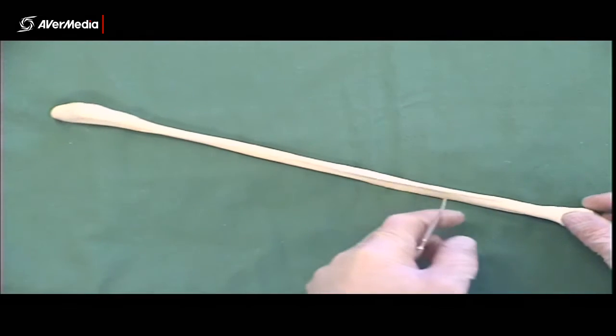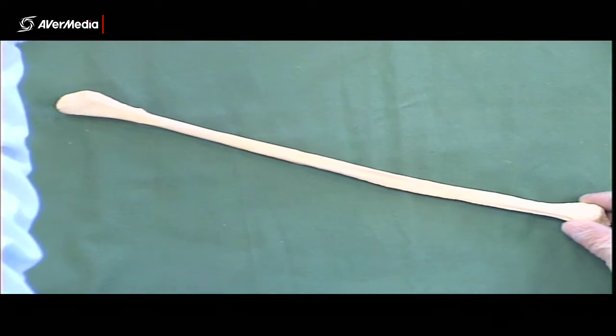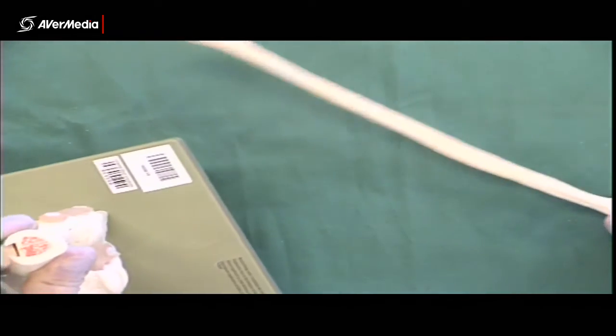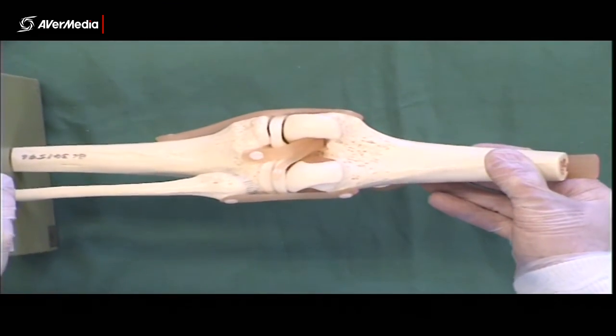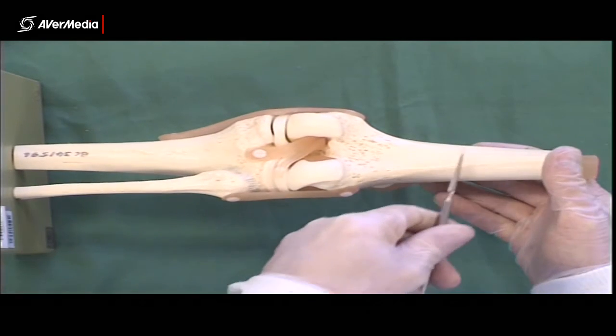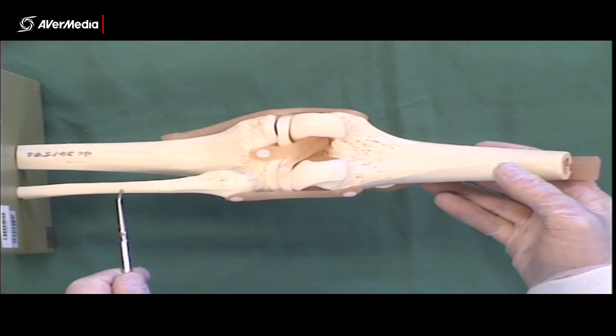Now, then, the other structures that we need that are related to the fibula that we need to be able to identify. Firstly, if we look at a knee joint, and here we've got the posterior view of a knee joint with femur, tibia, and fibula.